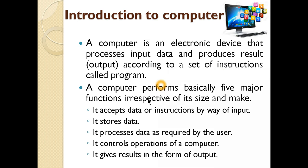A computer performs basically five major functions. Number 1: it accepts data — it takes input from the user. Data means anything it takes from the user — any photo, any text, any video, any audio, whatever you give to the computer, that is input. Then it stores that input, keeps it safe. Then it processes data as required by the user — it does the task the user has given. It controls the operation of the computer, and finally it gives us the output.